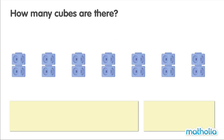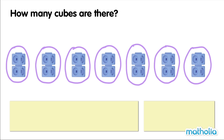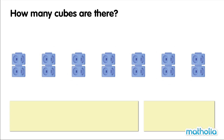How many cubes are there? There are seven groups of cubes. There are two cubes in each group. Let's count in twos to find the total.